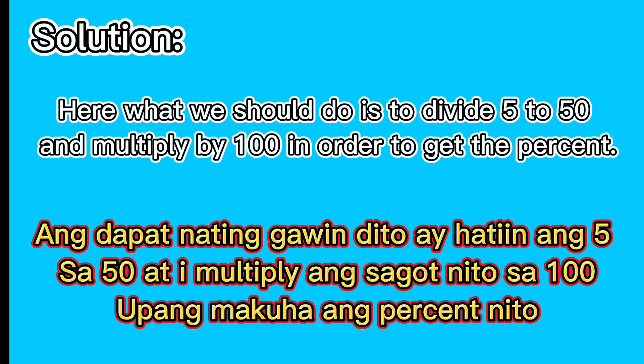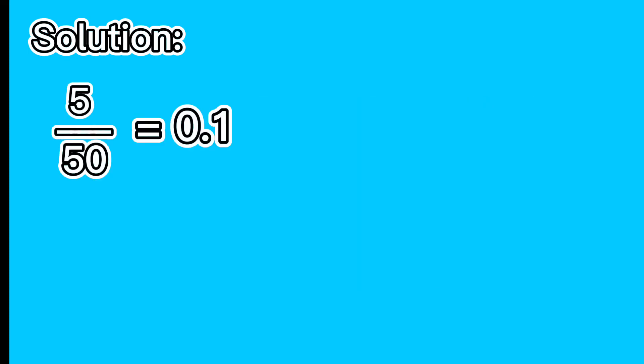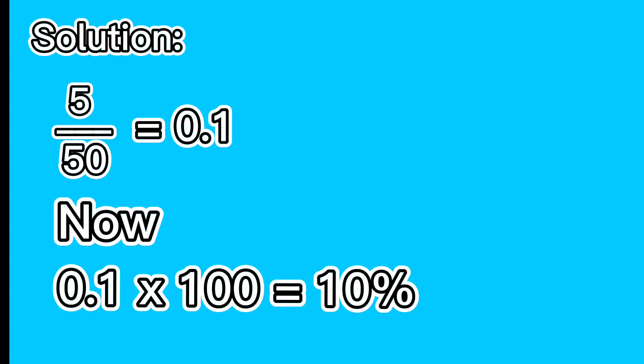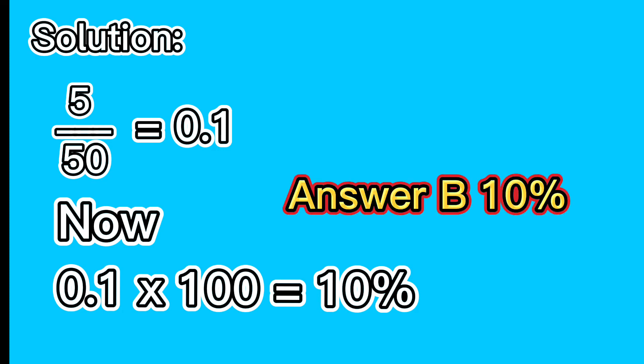Solution. Here what we should do is to divide 5 by 50 and multiply by 100 in order to get the percent. 5 divided by 50 equals 0.1. Now, 0.1 multiplied by 100 equals 10. Answer: 10%.